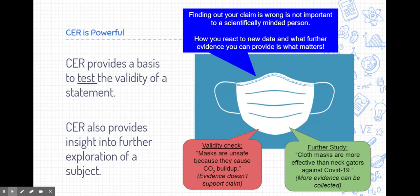The last thing I want to say is just kind of generally about CER and claims. Finding out your claim is wrong is not important to a scientifically minded person. We're going to find out our claim is wrong often. And that's the big part of science, trying something out, making a claim, and collecting evidence against it. Now, what is important to a scientifically minded person is how you react to new data, right? If you find out that something does not support a claim, how do you react? Do you change your stance? Also, what further evidence can you provide? That's also what matters. You know, if we find something out, we need to go collect more data and go find more information to further support the truth and further support scientific matters.